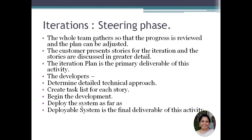In the iterations or steering phase, the entire team gathers to review progress and adjust the plan. The customer presents their stories for the iteration, discussed in greater detail — this is where actual implementation begins. The delivery iteration plan is worked on. Developers determine the technical approach, design, and coding required, then create tasks for each new story. Each story is divided into different parts with allocated tasks, and deployment begins — the system is deployed as the final delivery. The entire story is divided into tasks and allocated to different engineers or developers.